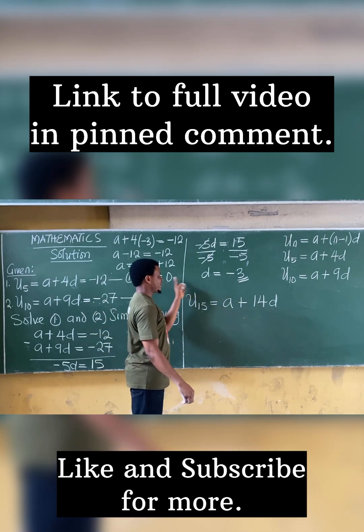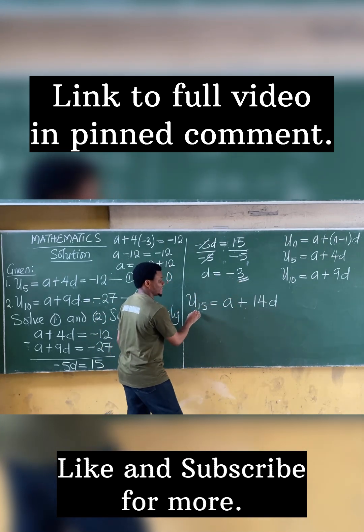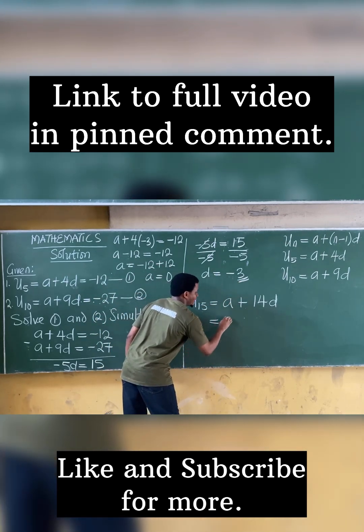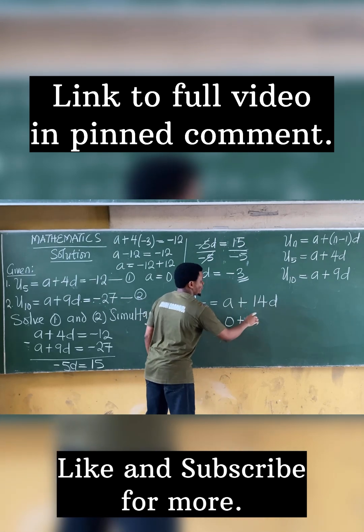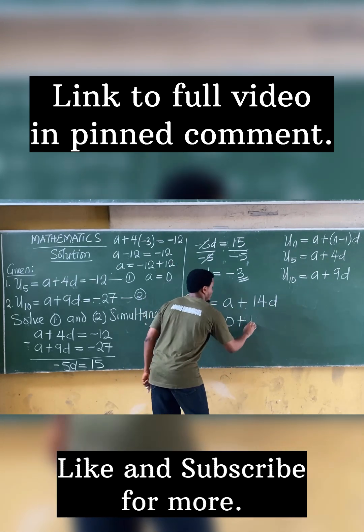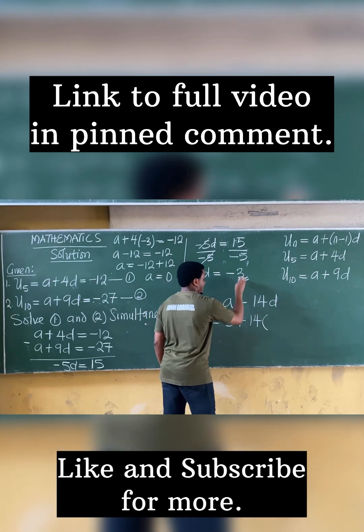This minus 3. Bring these two values here. We have that the 15th term is equal to A, 0 plus, we have 14D. So it becomes 14 times D is minus 3.